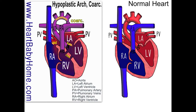So let's start up at the top with that hypoplastic arch. Hypo means under and plastic refers to development, and so that arch of the aorta compared to the normal heart, you can see it's a lot smaller because it didn't fully develop.